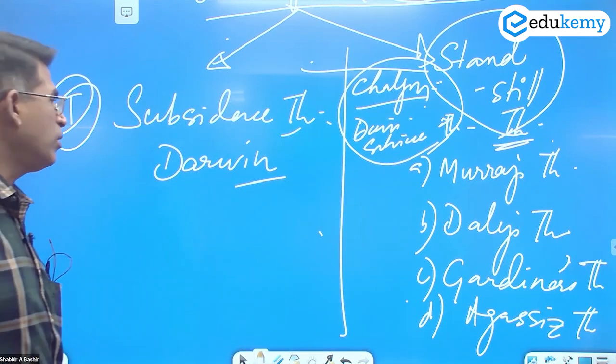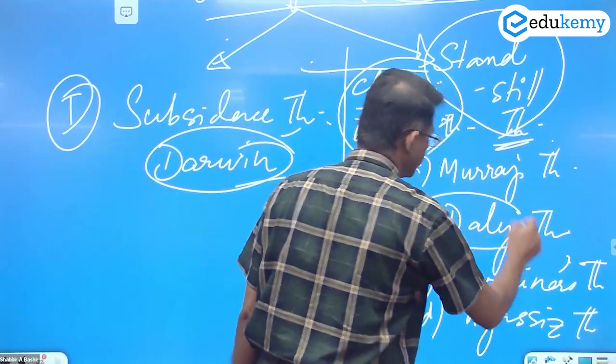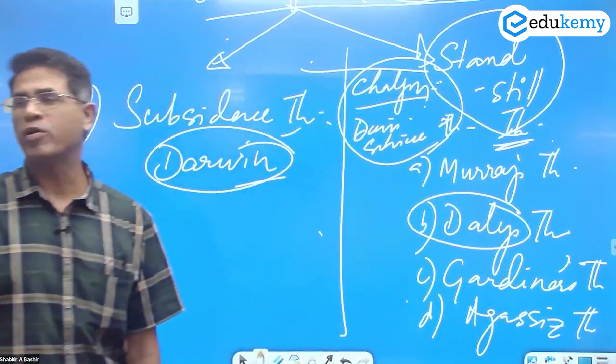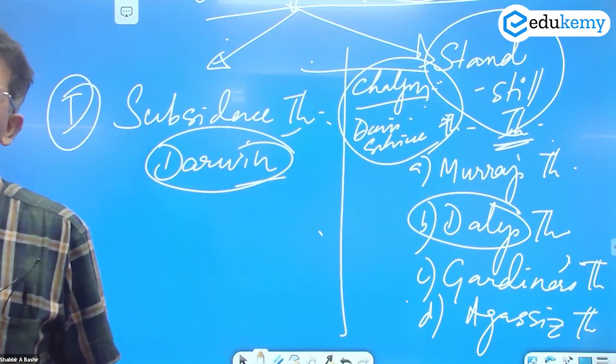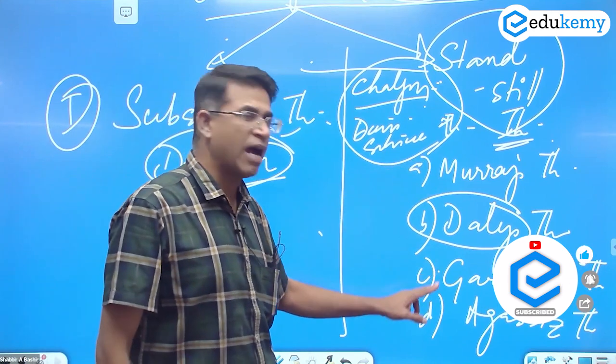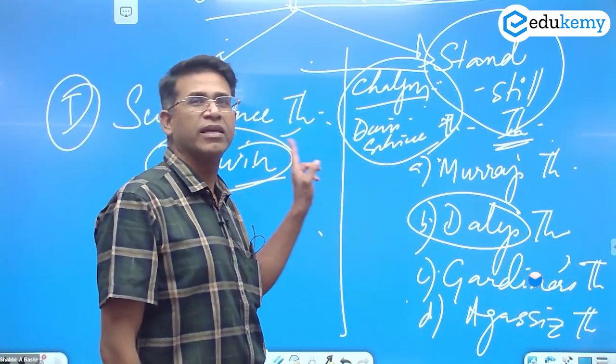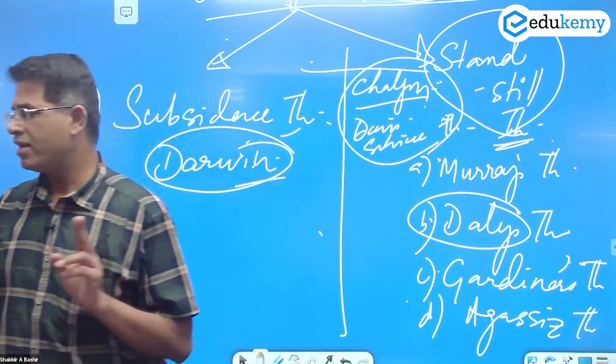You have to know mainly Darwin's theory and Daly's theory. Your book also has these two. I will give you some points on these, but I will not elaborate much. You should know these two mainly: Darwin's theory and Daly's theory.